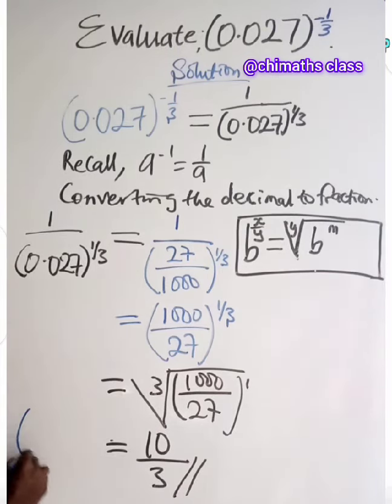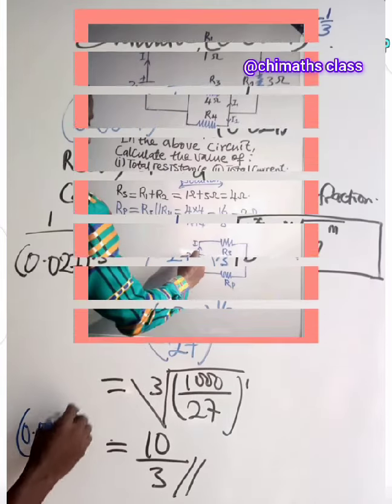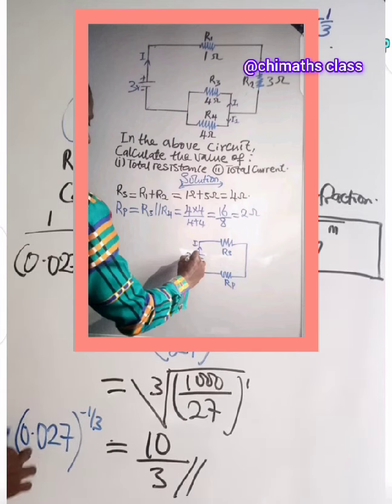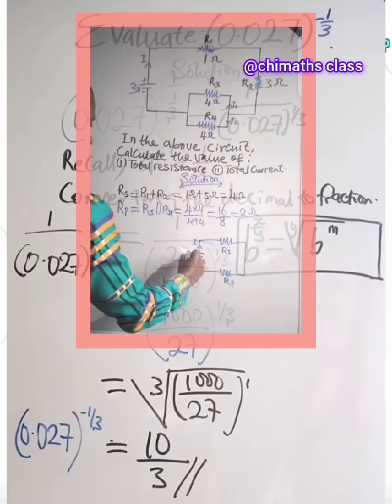So all in brackets, 0.027, all raised to power minus 1 over 3. So 0.027 all raised to power minus 1 over 3 is equals to 10 over 3.